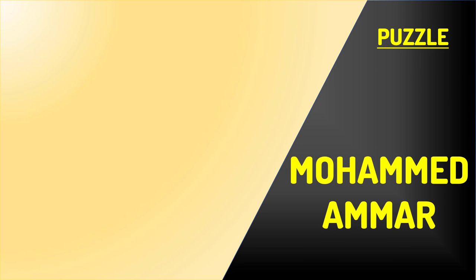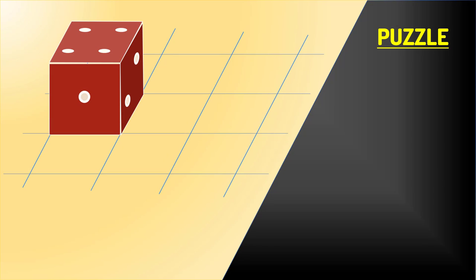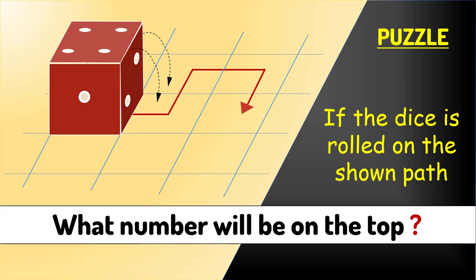What's up logical people, this is Ammar. A dice is placed as shown here. If you roll it on the path shown, what number will you get on the top? Pause the video and think logically.